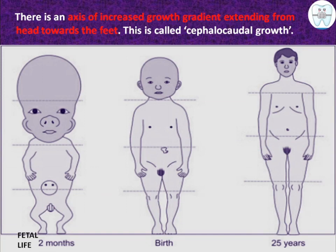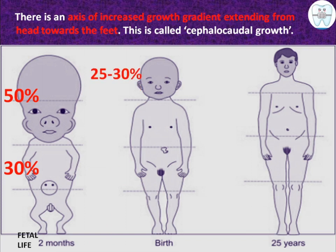Looking at the pictorial representation, three different time periods of growth are shown: fetal life at two months, birth, and 25 years. In fetal life, 50% of the total body length is taken by the head, while 30% is for the limbs. As the baby is born, the head covers only 25 to 30%.